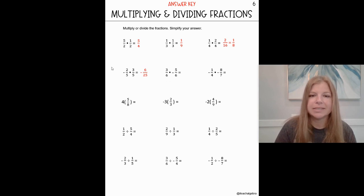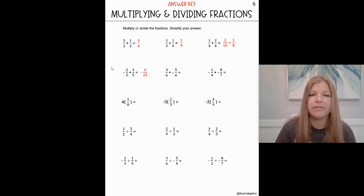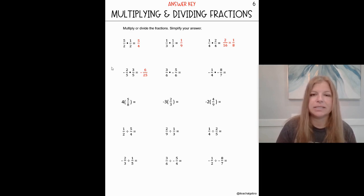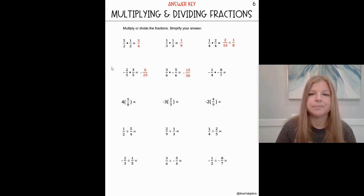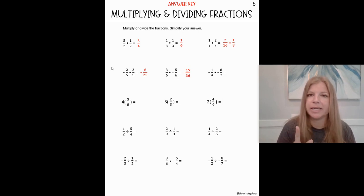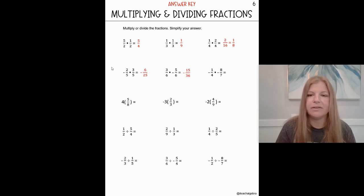Three sixths times negative five sixths. Again, I treat the negative like it's really a negative five. Three times negative five is negative fifteen, six times six is thirty-six. Next one: negative one fourth times negative eight sevenths. A negative times a negative is a positive. One times eight is eight, four times seven is twenty-eight.